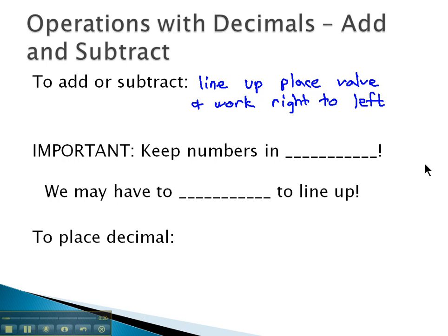However, decimals might have a different number of digits after the decimal point and so it's very important that we keep the numbers in order, which means we can't flip the order of the subtraction and we may have to add zeros to line up all the decimals, all the place values.